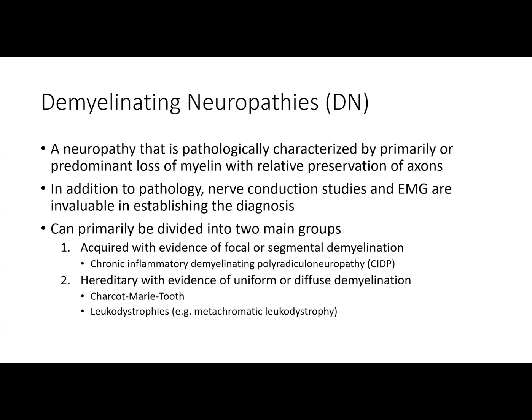Demyelinating neuropathies are neuropathies that are pathologically characterized by primarily or predominant loss of myelin with relative preservation of axons. In addition to pathology, nerve conduction studies and EMG are invaluable in establishing the diagnosis. These can primarily be divided into two main groups. The first would be acquired demyelinating neuropathies with evidence of focal or segmental demyelination — a disease such as chronic inflammatory demyelinating polyradiculoneuropathy, or CIDP, would fit under this category.